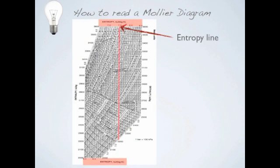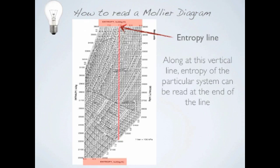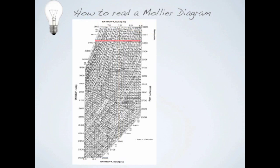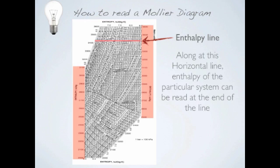Entropy line: along this vertical line, the entropy of the particular system can be read at the end of the line. Enthalpy line: along this horizontal line, the enthalpy of the particular system can be read at the end of the line.